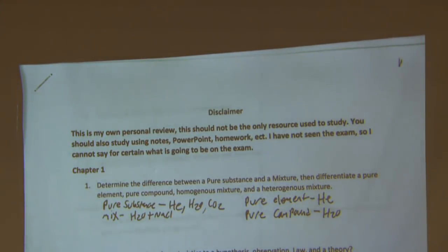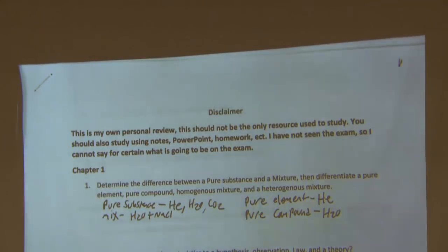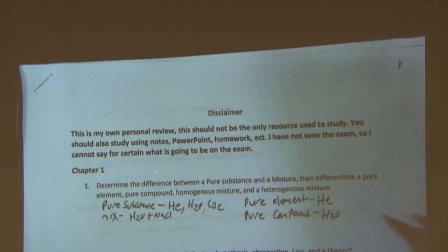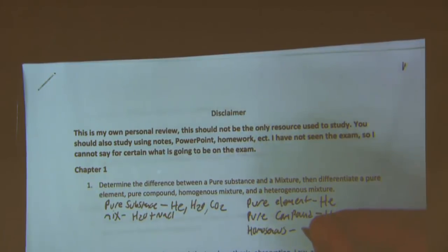We have two different types of mixtures: homogeneous and heterogeneous. An example of a homogeneous mixture would be salt water — it just looks like one thing. It's uniform; you can't physically separate it, and by just looking at it you can't tell a difference.